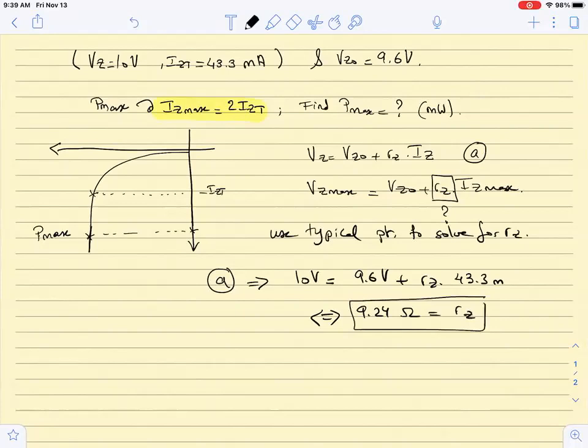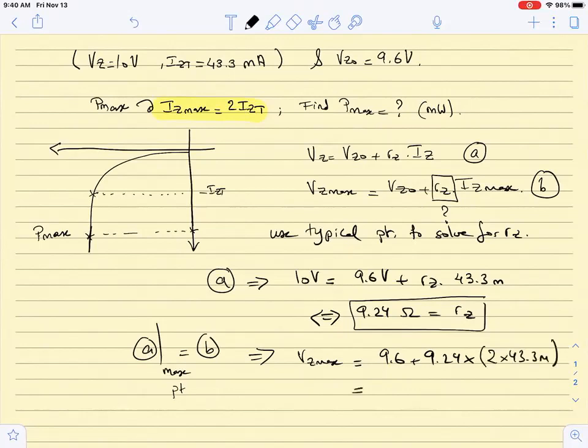Once I find Rz, I can plug it in equation B and equation B, which is basically the same at A at Vmax, which is equal to A at max point. And I will get that Vzmax is equal to Vz0, 9.6 plus 9.24 times 2 times 43.3 milli. And we end up getting Vzmax to be equal to 10.4 volts.